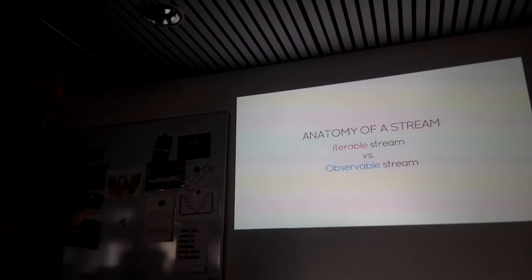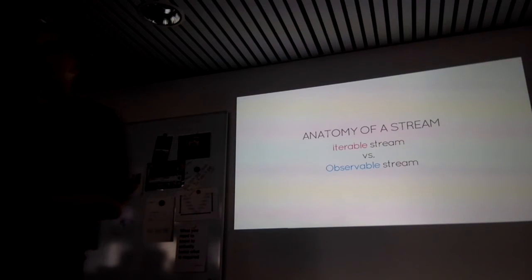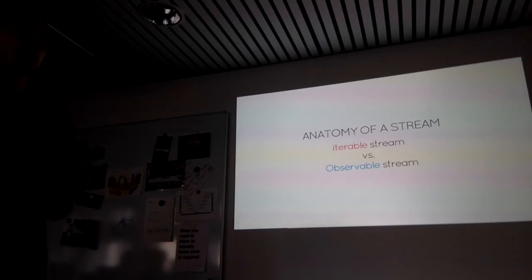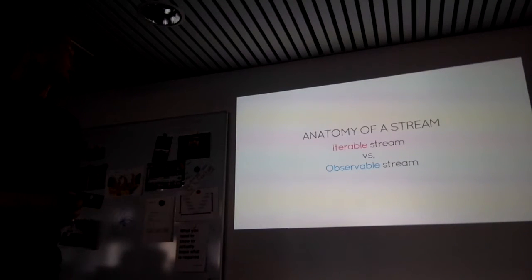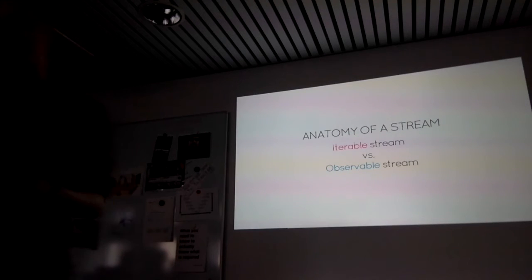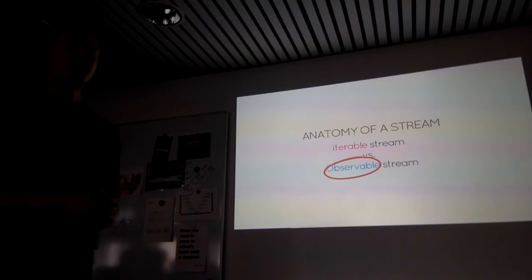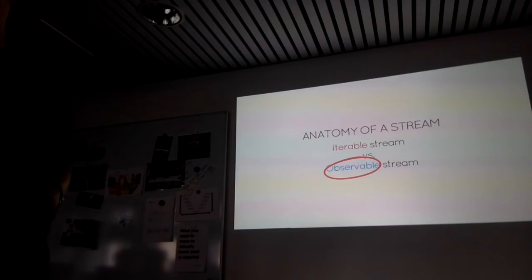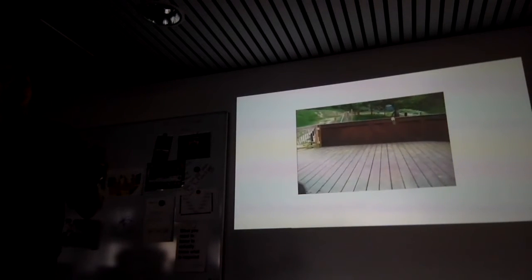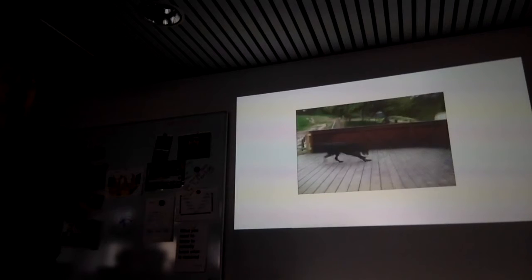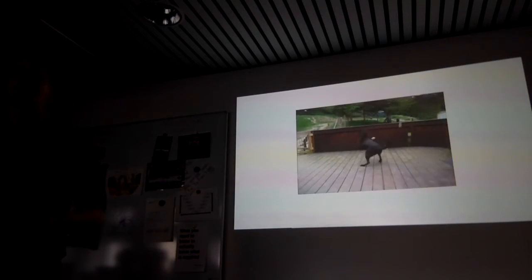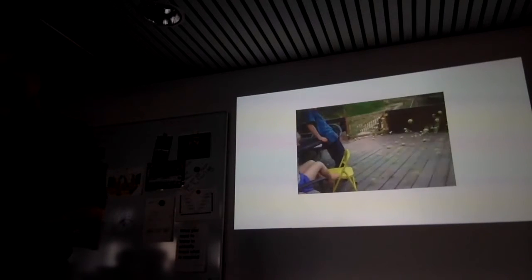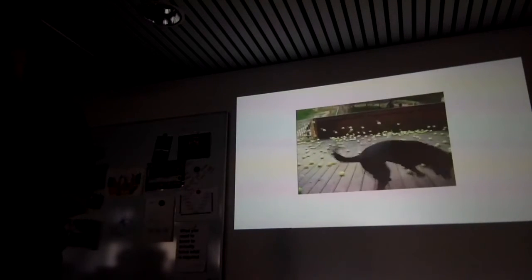There are actually two types of streams in computer science theory: iterable streams and observable streams. Iterable streams are more like basic iterators — you can fetch values whenever you want. Observable streams are what this talk is about. The difference is that they will emit values whenever they happen without you asking for them. Iterable streams are pull — you pull values when you want. Observable streams will emit values whether you want them or not.